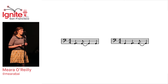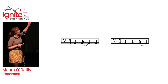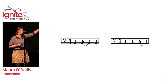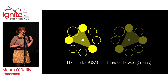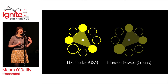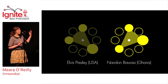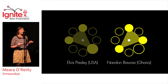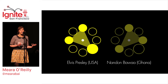Here's a traditional notation of two different rhythms. On the left, it's Hound Dog, made famous by Elvis Presley, and on the right, it's Nendonboa, a rhythm from Ghana. These are rhythmically distinct pieces of music, but visually you can't tell the difference very easily. When they're expressed as a circle, it's easy to see that they're actually mirror images of each other, with one being a rotated version of the other.